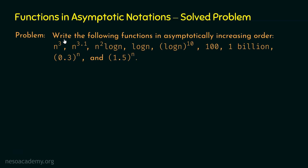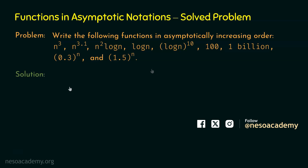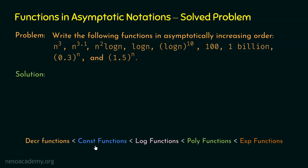Here is the problem: write the following functions in asymptotically increasing order. To do this, we follow the rule concluded from the last lecture — decrement functions are asymptotically less than constant functions, constant functions are less than logarithmic, logarithmic less than polynomial, and polynomial less than exponential. This is the arrangement in asymptotically increasing order.